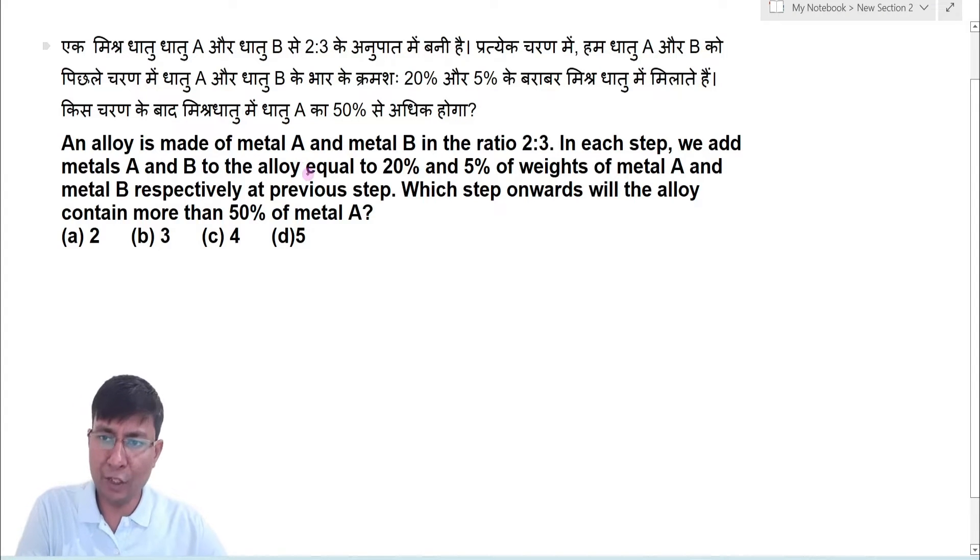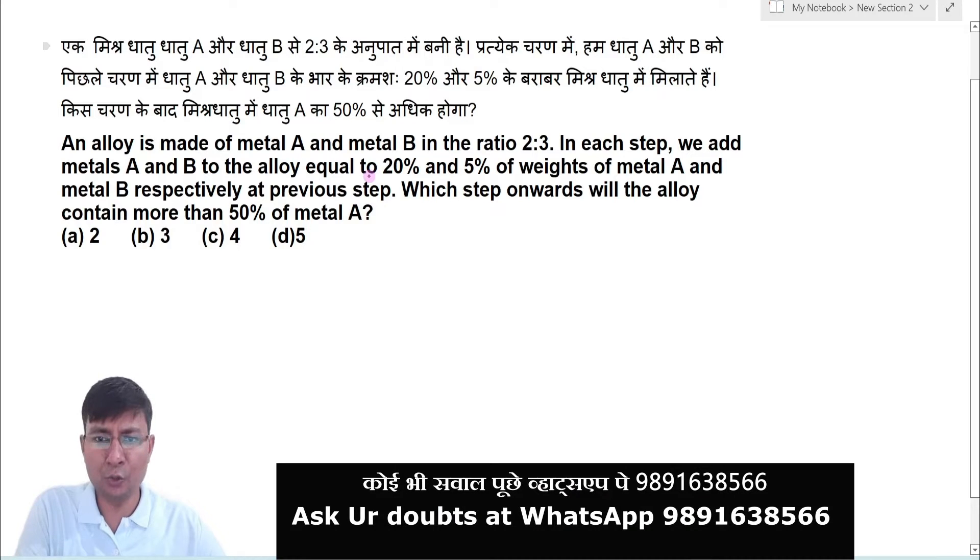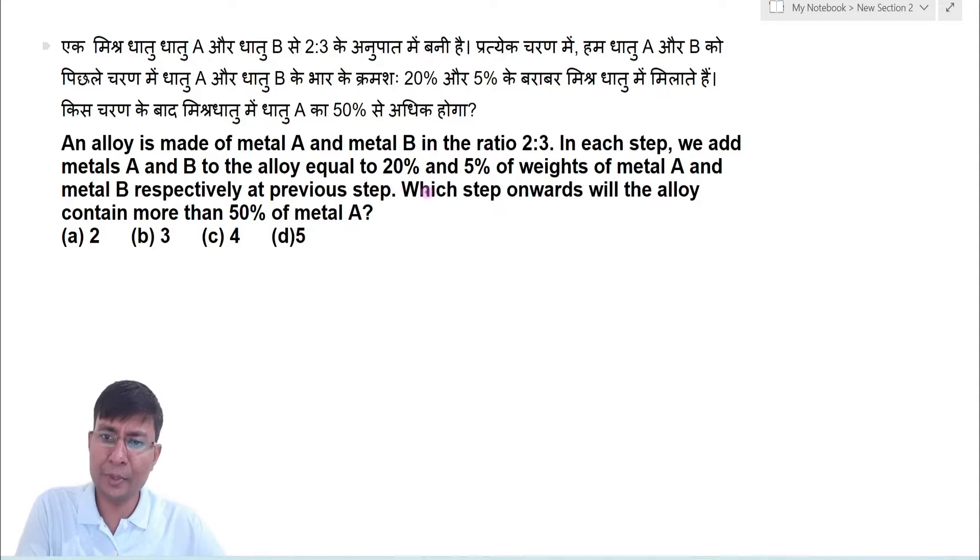An alloy is made of metal A and B in the ratio 2:3. In each step, we add metals A and B to the alloy equal to 20% and 5% of weights of metal A and B respectively at previous step. Which step onwards will the alloy contain more than 50% of metal A?